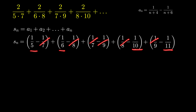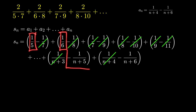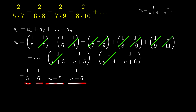So what is our formula for S sub n? If we continue writing up to the nth term, including a sub (n minus 1) and a sub n, the remaining terms after all cancellations are: 1 over 5, 1 over 6, minus 1 over (n plus 5), and minus 1 over (n plus 6). So S sub n equals 1 over 5 plus 1 over 6 minus 1 over (n plus 5) minus 1 over (n plus 6), and the constant part 1 over 5 plus 1 over 6 equals 11 over 30.